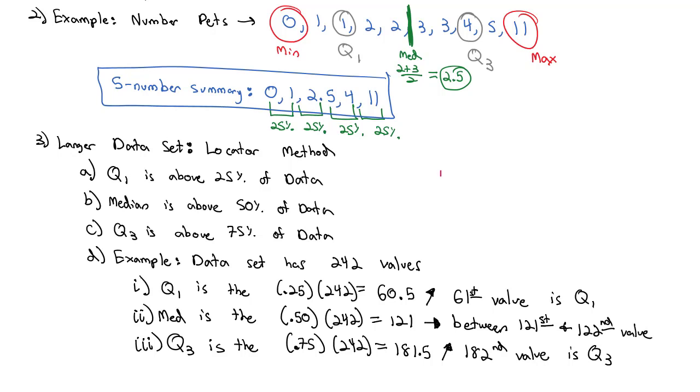The big thing to note, and we're going to make a note here, in red: these give the location, not the value of Q1, the median, and Q3.